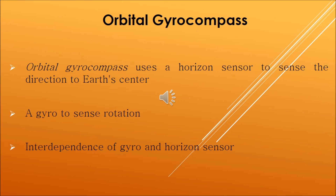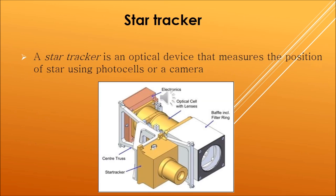Similar to the way that an earthly gyro compass utilizes a pendulum to sense native gravity and influences its gyro in its orientation with earth's rotation and consequently points north, an orbital gyro compass utilizes a nadir detector to sense the direction to earth's center and a gyro to sense rotation about an axis normal to the orbital plane. Thus the horizon sensor provides pitch and roll measurements, and the gyro provides yaw.